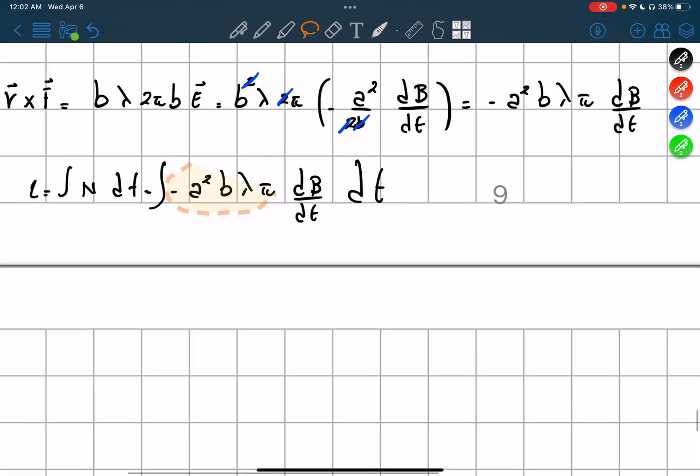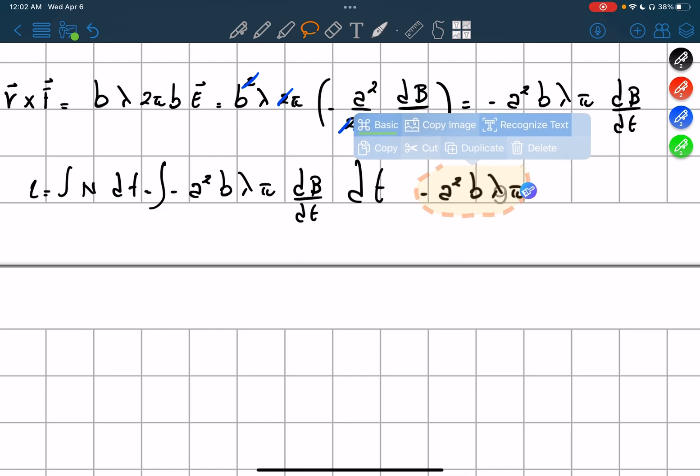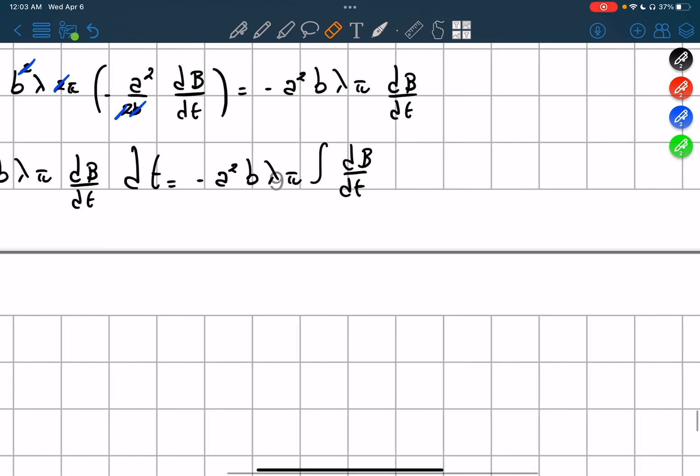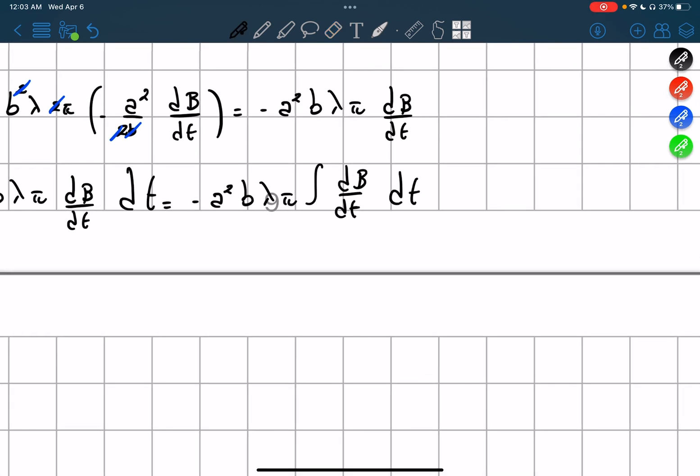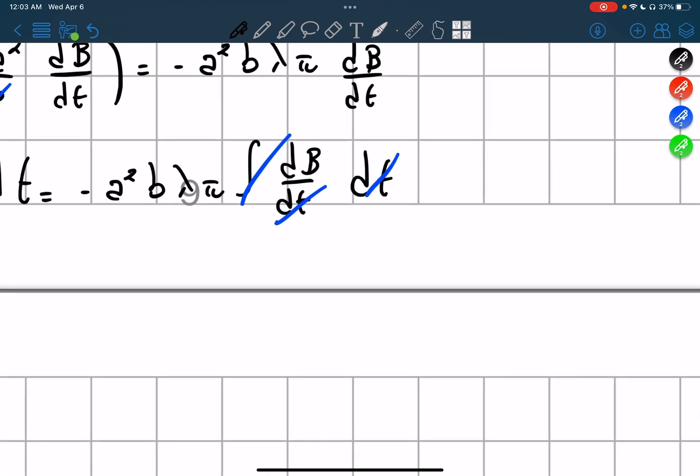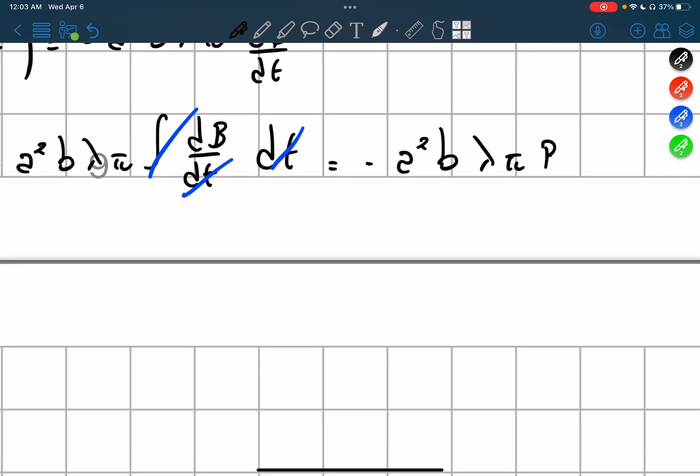Now, all of these are constants. So we're going to take them out. So what are we left with inside the integral? We're going to have our derivative of B in terms of T, and then integral of T. Now we can just say that these two cancel out, so the integral cancels out, and therefore it's going to equal negative A squared B lambda pi B. Now we're talking about B naught, so the initial change.